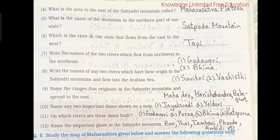8. Write the names of any two rivers which have their origin in the Sahyadri mountain and flow into the Arabian Sea. Savitri and Vaishishti. 9. Name the ranges that originate in the Sahyadri mountain and spread to the east. Mahadev, Harishchandra, Balaghat.